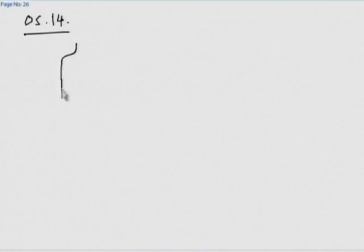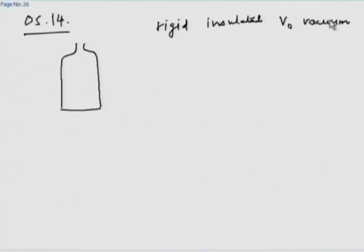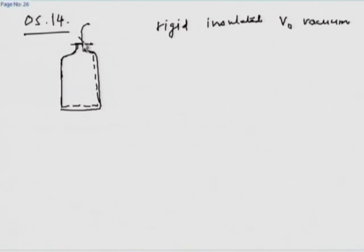Consider it as a transient process integrated over time. If this is the bottle — the bottle is rigid and insulated — it has some volume V0 and is perfectly evacuated. The initial state is vacuum. The control volume is the inner surface of the bottle and the opening through which air goes in.